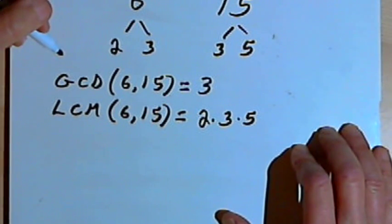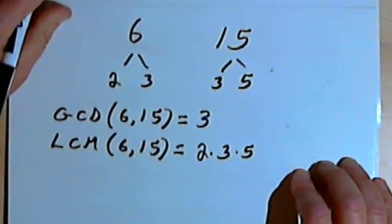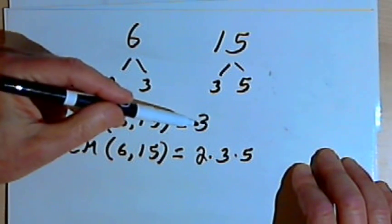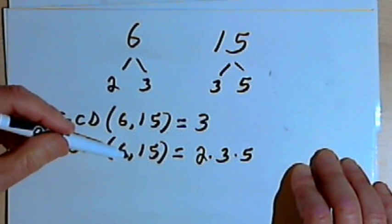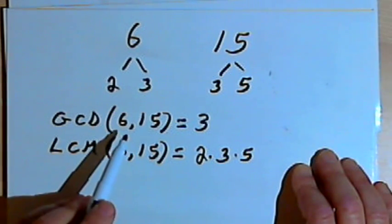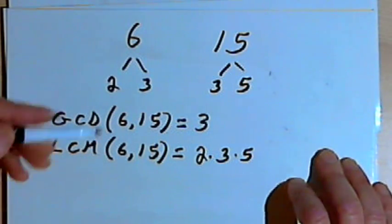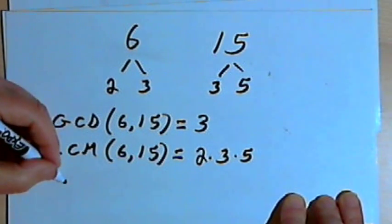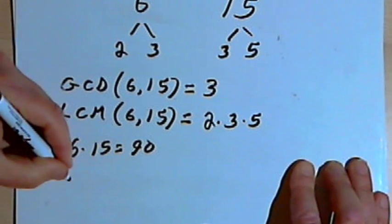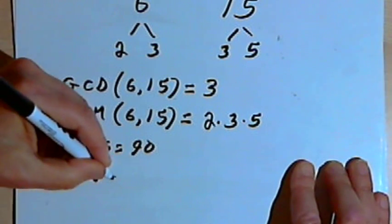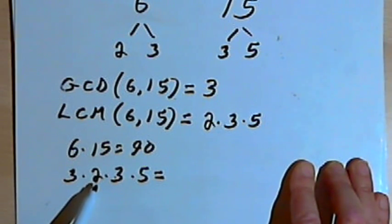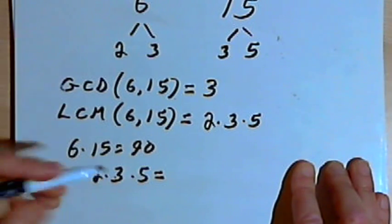The GCD-LCM product theorem says something like this: if I take the GCD of these two numbers — the 3 — and multiply it by the least common multiple of those two numbers — the 2 times 3 times 5 — I'm going to get the same thing as if I multiply 6 times 15. So 6 times 15 is 90. And if I multiply 3 times 2 times 3 times 5, that's 2 times 3 is 6, and 6 times 3 is 18, and 18 times 5 is 90.